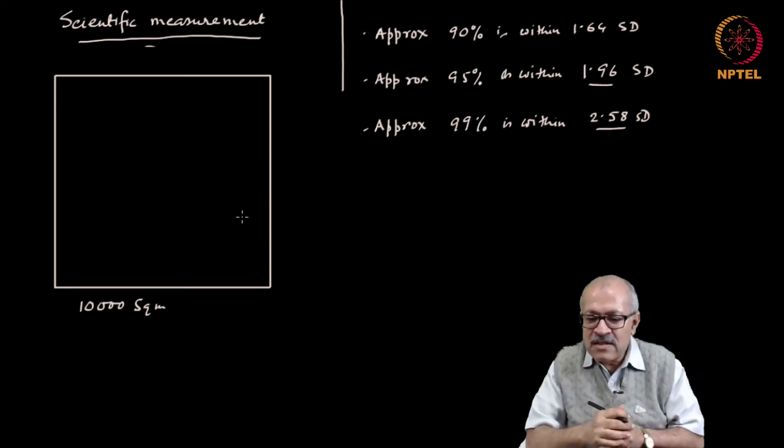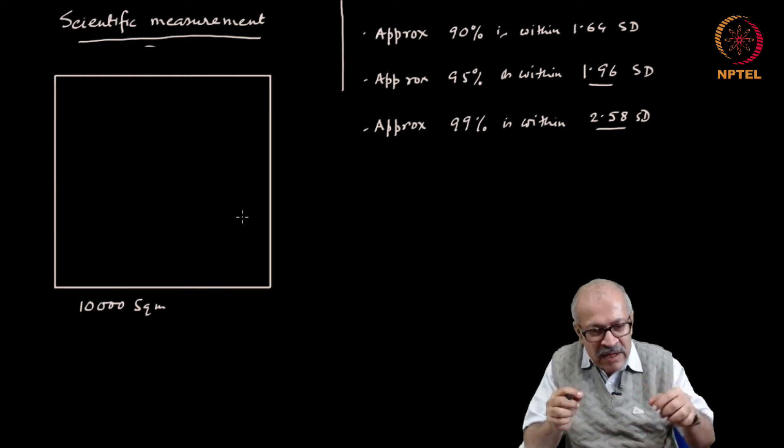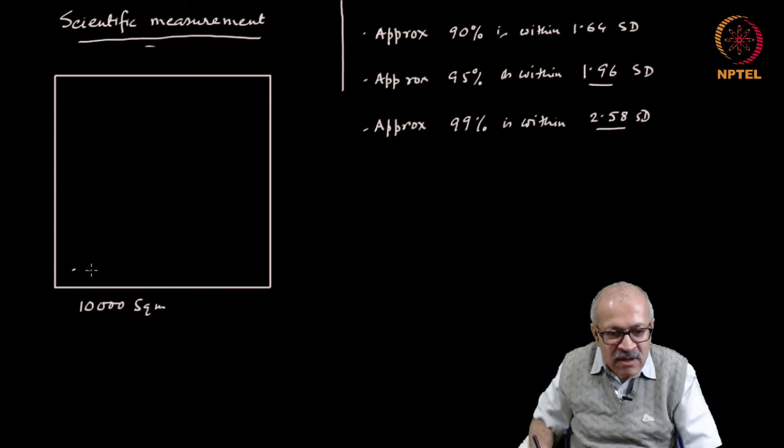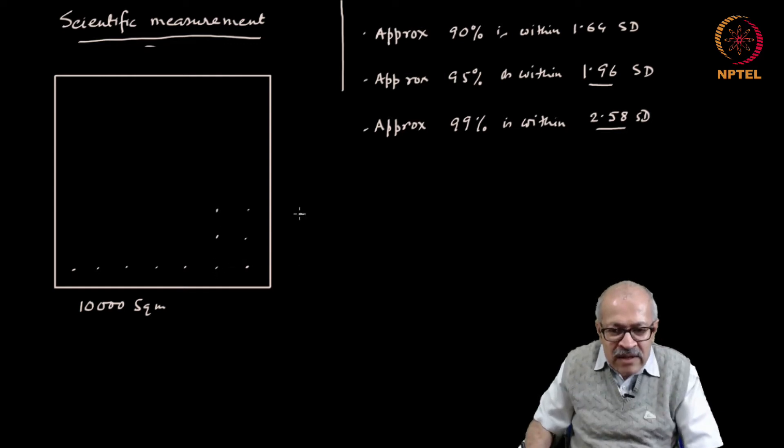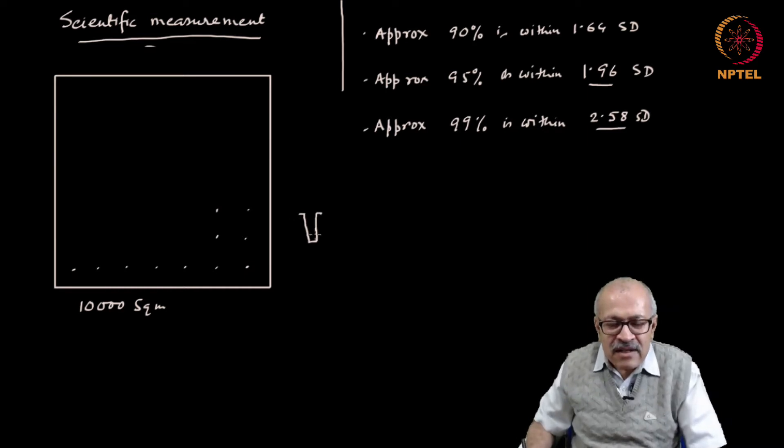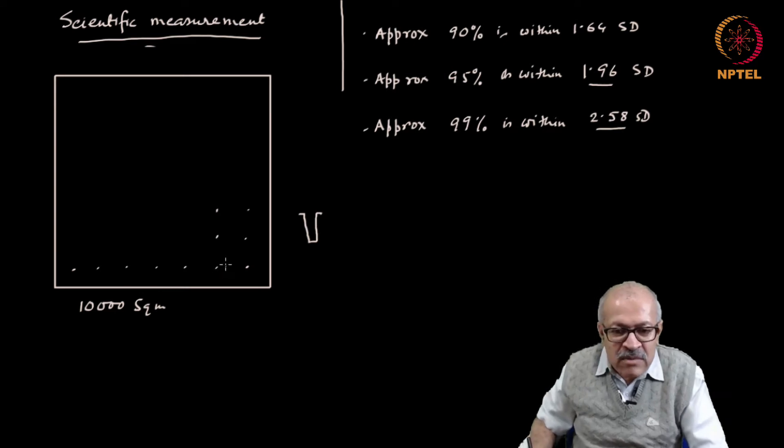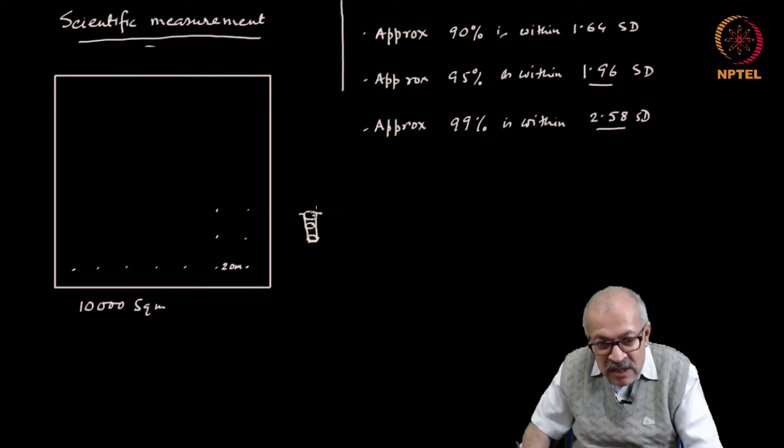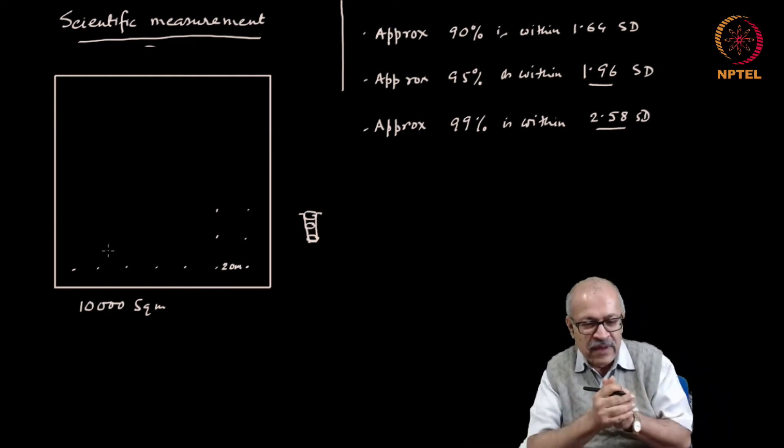So what is done? What is done is that we make holes about every 20 meter distance. So like this, every 20 meter distance holes will be made. These holes will be like this, and soil will be collected from the top, from the middle and from the bottom. And then this soil that has been collected will be, if this is done from all the holes all around, it will be huge amount of soil.